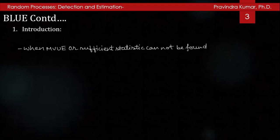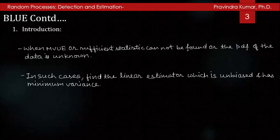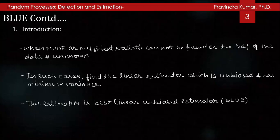In many estimation problems, the MVUE or the sufficient statistic cannot be found, or the PDF of the data is itself unknown, or only the second-order statistics are known in the sense that they can be estimated from the data. In such cases, one solution is to assume a functional model of the estimator to be linear in data and find the linear estimator which is unbiased and has minimum variance. This estimator is known as the best linear unbiased estimator, which can be determined with knowledge of only the first and second moments of the PDF. Since complete knowledge of the PDF is not necessary in BLUE, it is frequently suitable for practical implementation.